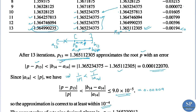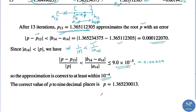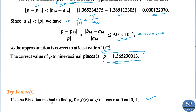So we have obtained the approximate root p₁₃ = 1.365112305. Using computer software, the actual value of the root is p = 1.365230013. Now you can try this problem yourself: use the bisection method to find p₃ for f(x) = √x − cos(x) = 0 on the interval [0, 1]. You need only three iterations to find the third approximate root p₃.